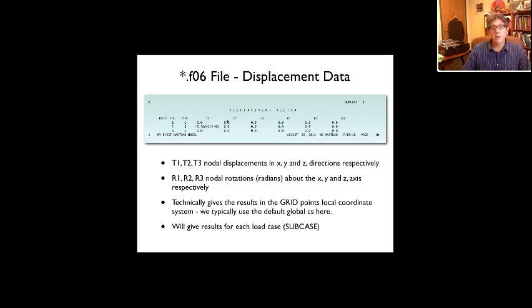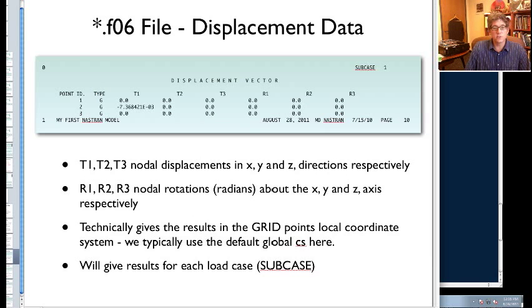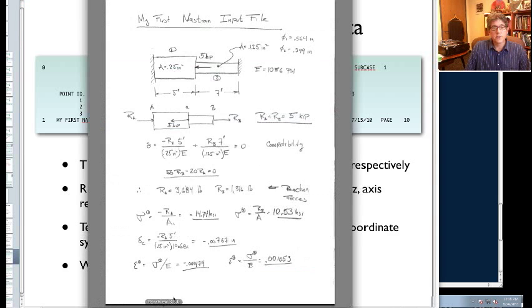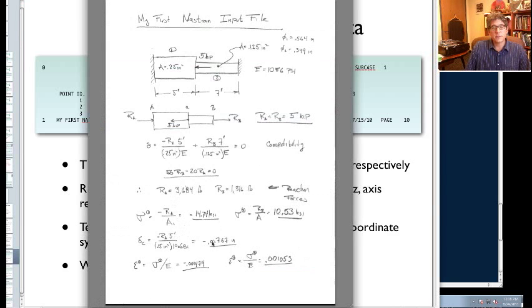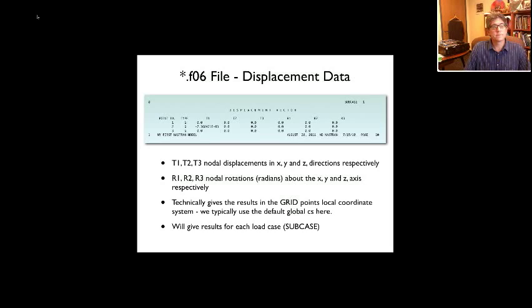In fact, here you can see all the displacements are zero except for the x displacement at node 2. And it's minus .00737 units. And that actually corresponds directly to the exact solution. We'll go back to the exact solution. Here's the exact solution. Here you can see the displacement is minus .00763 inches, okay? So this is why you want to check those values. All the other displacements are zero.